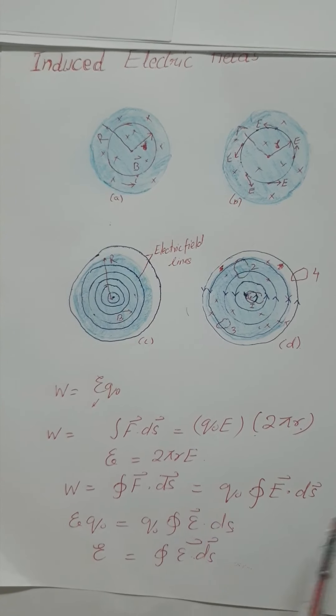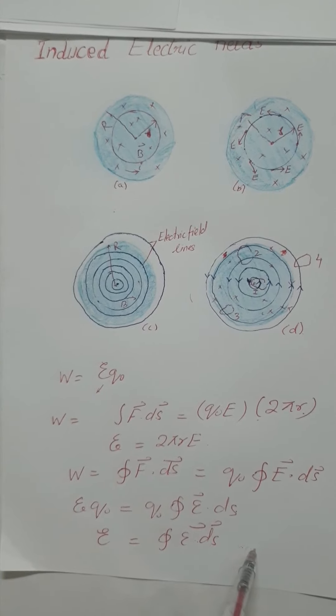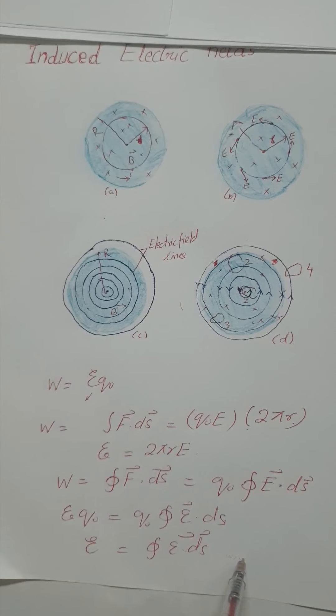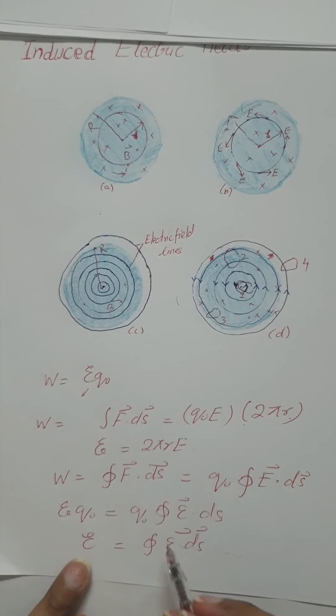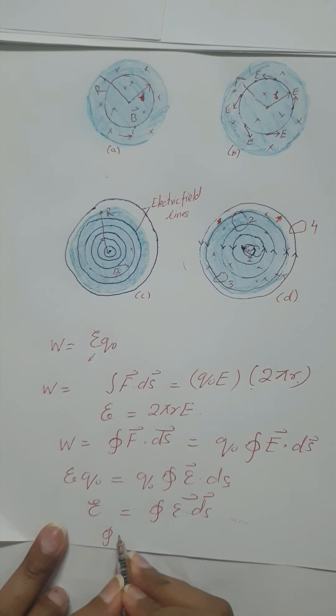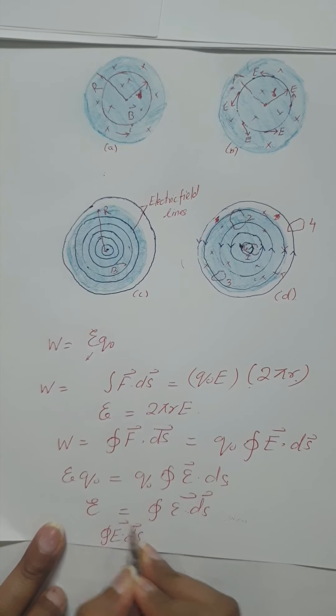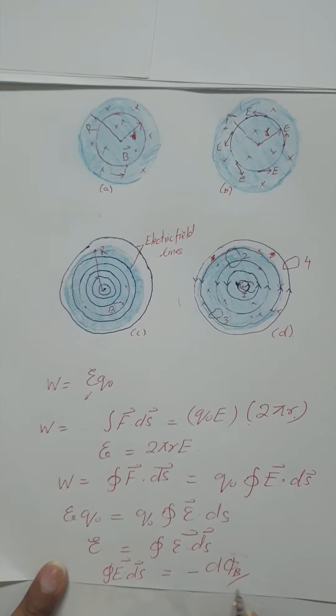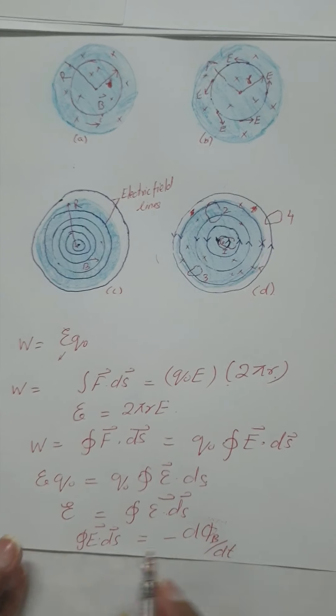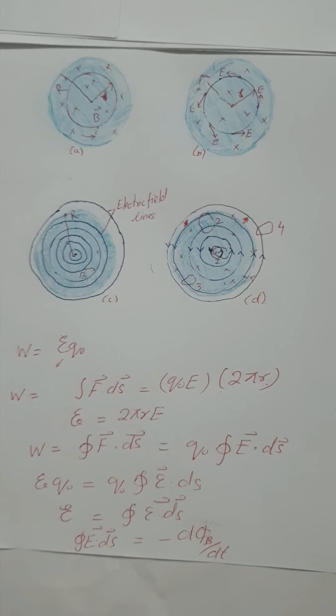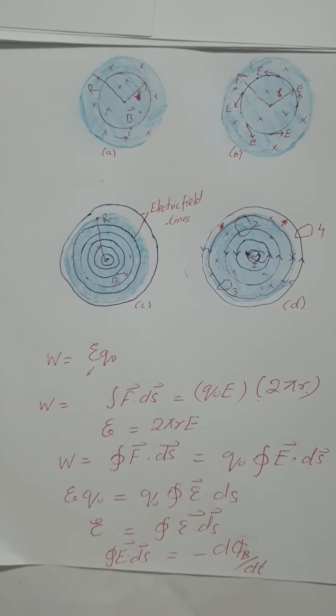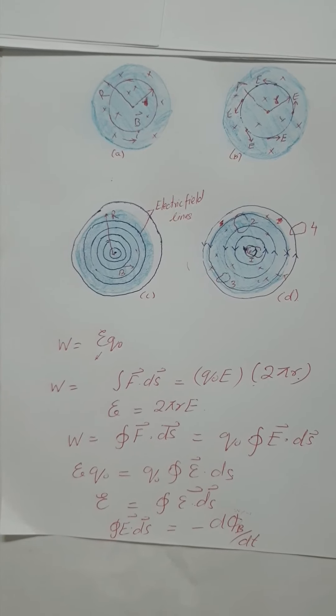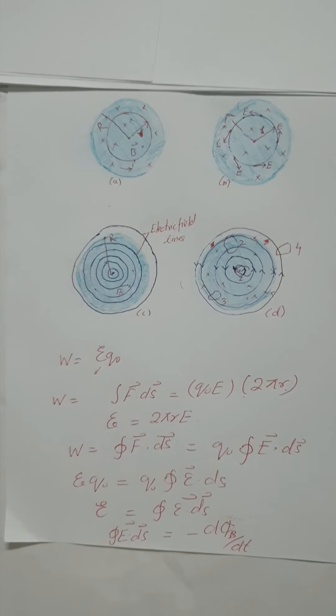If we combine this equation with Faraday's law, we can rewrite Faraday's law as the closed loop integral of E dot DS is equal to minus D phi B over DT. Induced EMF is equal to the change in rate of magnetic flux. So this is the reformulation of Faraday's law.